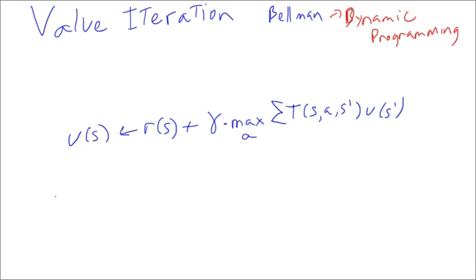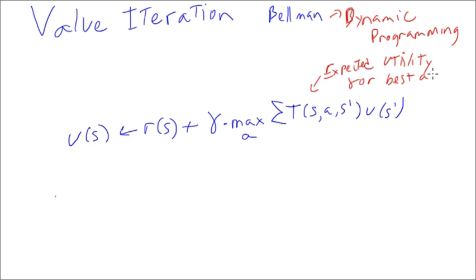In English, this part tells us the expected utility for the best action from s. Given that the agent is in state s, it can take any number of actions — what's the best action a, and what's the utility given that it takes a? That whole thing gets discounted by gamma. Notice this has a U in it, so it's a recursive definition, and we need a way to calculate this whole thing.